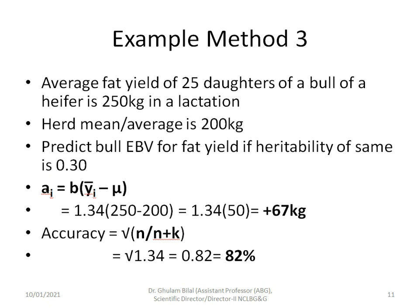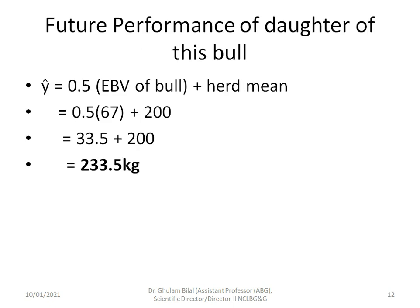Example for Method 3: average fat yield of 25 daughters of a bull is 250 kg per lactation and herd average is 200 kg. Heritability is 0.3. B = 1.34, ȳ_i − µ = 50 kg, so EBV = +67 kg. Accuracy = √(N / (N + k)) = 82%. To estimate future performance of a daughter of this bull: ŷ = ½ × EBV_bull + herd mean = 33.5 + 200 = 233.5 kg for fat yield.